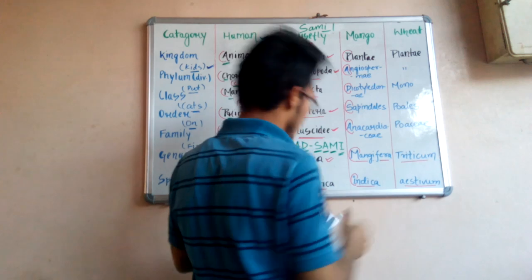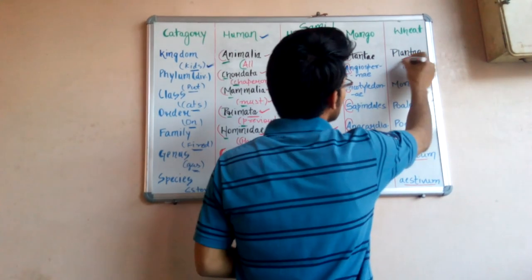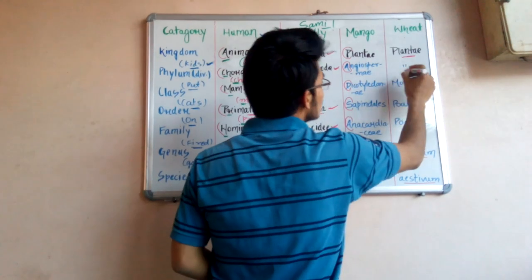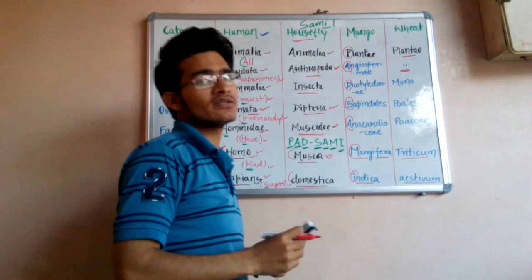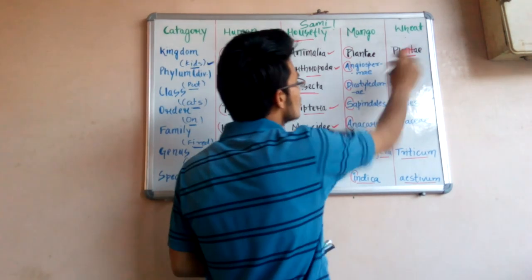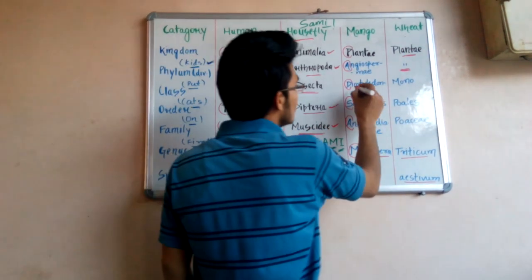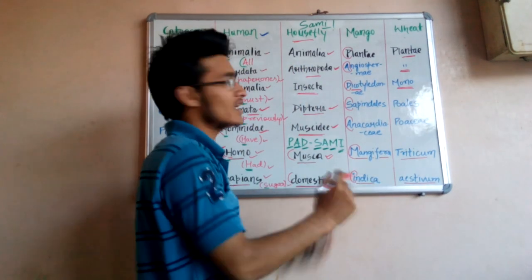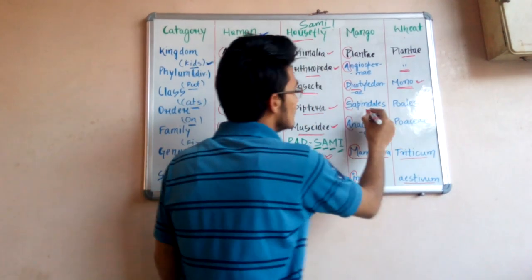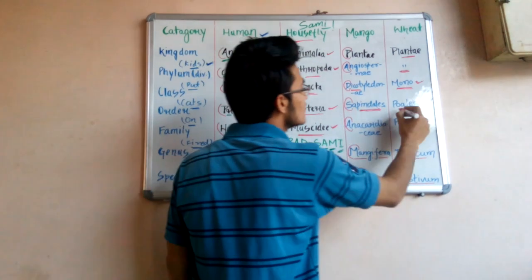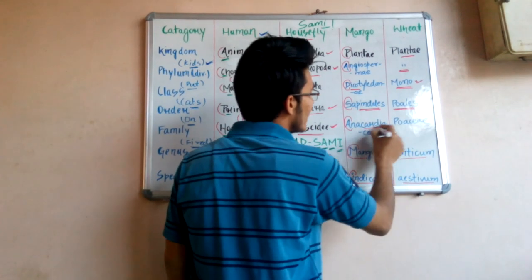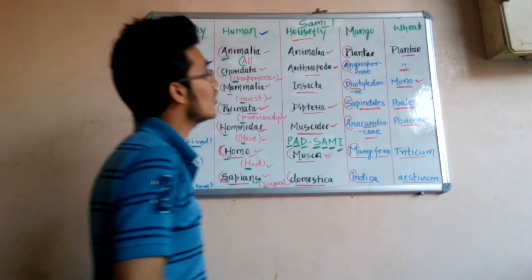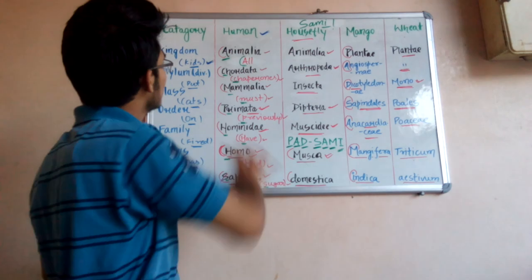Now we relate this trick to wheat. Wheat is also a plant, so the Kingdom remains Plantae. Wheat is also an angiosperm, as all flowering plants are angiosperms. However, while mango is a Dicotyledonae, wheat is a Monocotyledonae — this is the key difference to remember. The Order becomes Poales instead of Sapindales, and the scientific name of wheat is Triticum aestivum.